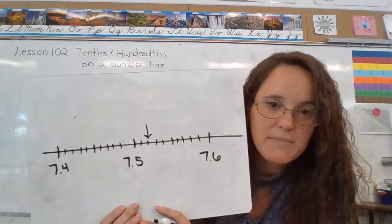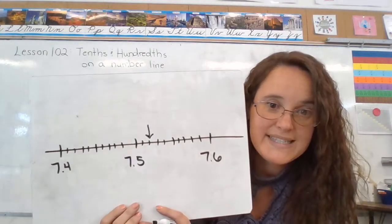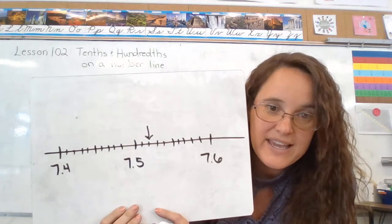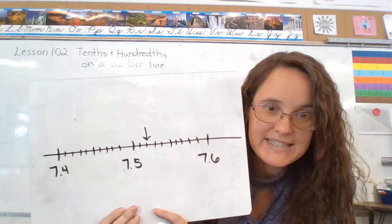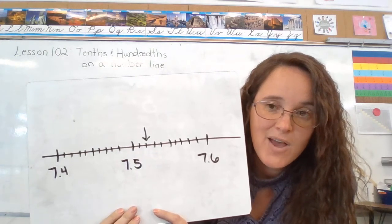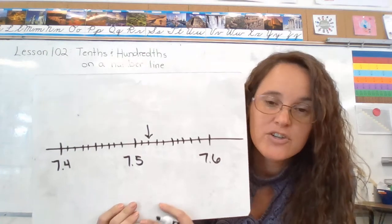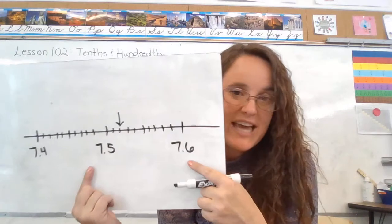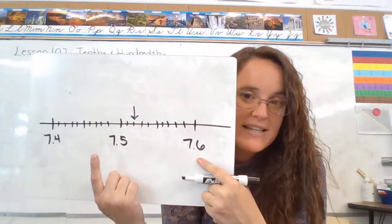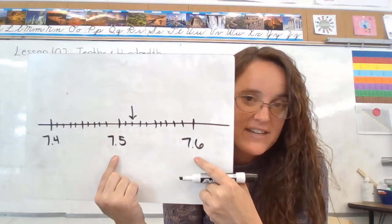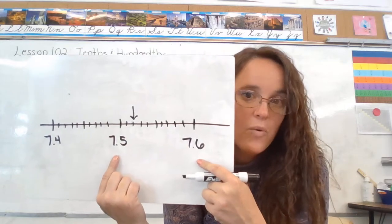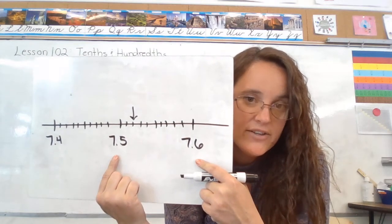And the arrow here is pointing at this notch right there. So what happens if we take 1 tenth and break it into 10 pieces? We have hundredths. So in between each tenths, this is between 7 and 5 tenths and 7 and 6 tenths, we've broken it into hundredths.